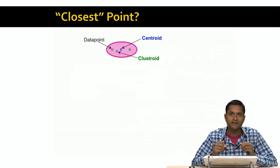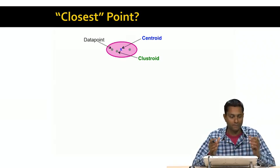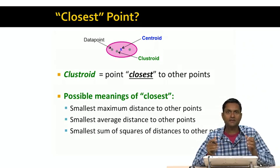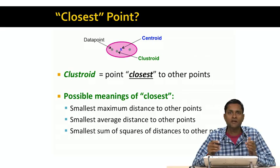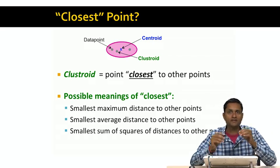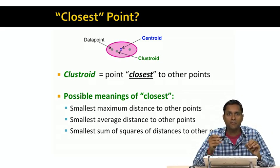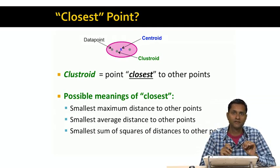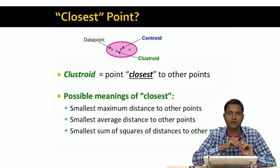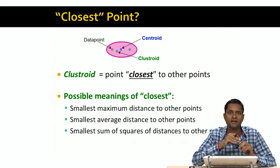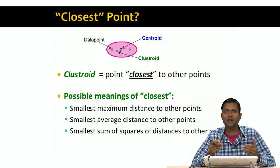We've defined the clustroid to be the point that is closest to the other points within the cluster. How exactly do we define this notion of closest? It turns out there are multiple ways. We might pick the point at the smallest maximum distance to other points — measuring the distance between every pair and finding the point whose maximum distance to any other point in the cluster is as small as possible. Instead, we might look at the point with the smallest average distance to the other points, or the point with the smallest sum of squares distance. Depending on the application, one or another of these notions of clustroid may make more sense.